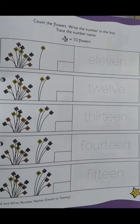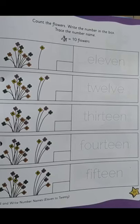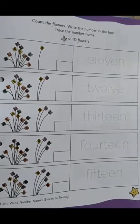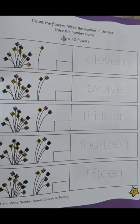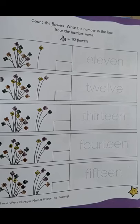So, now we will be doing number names part 3. We have moved to the next page, that is page number 27. What we have to do: count the flowers, write the number in the box, trace the number name.